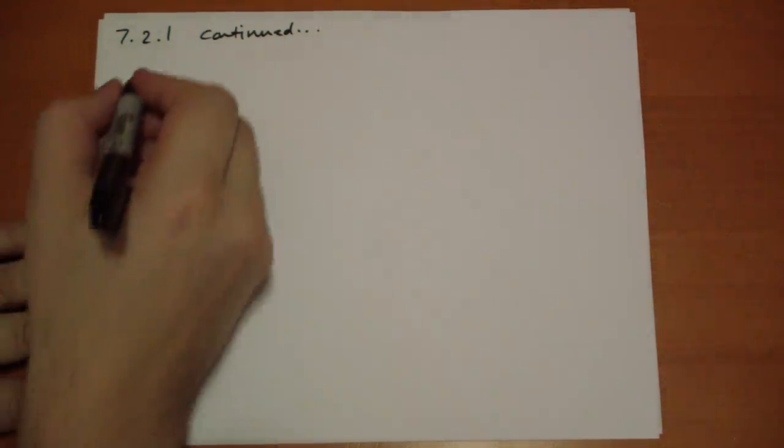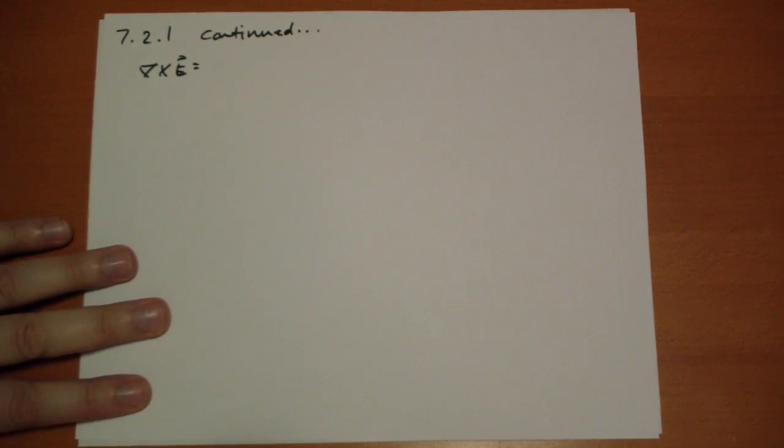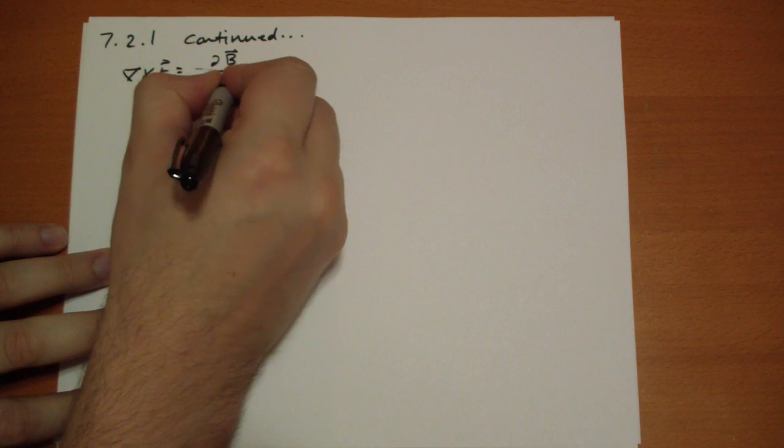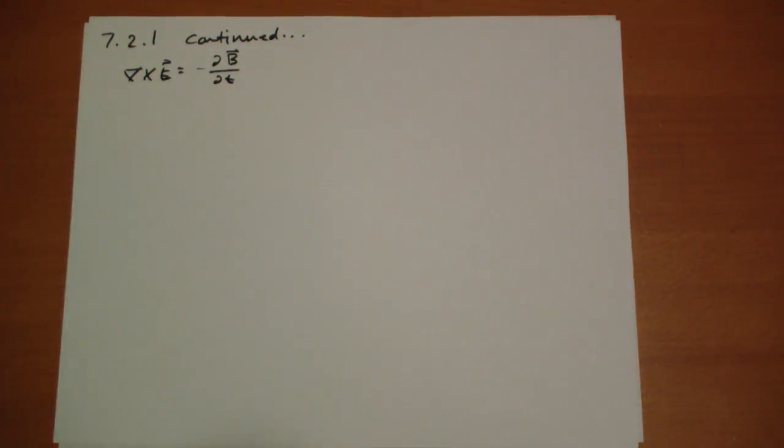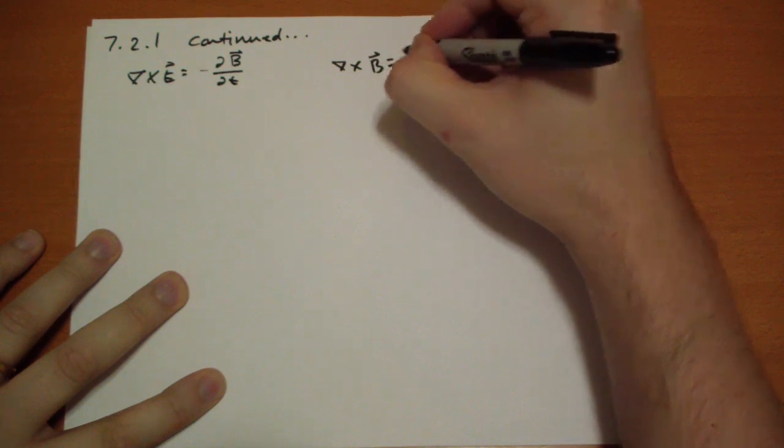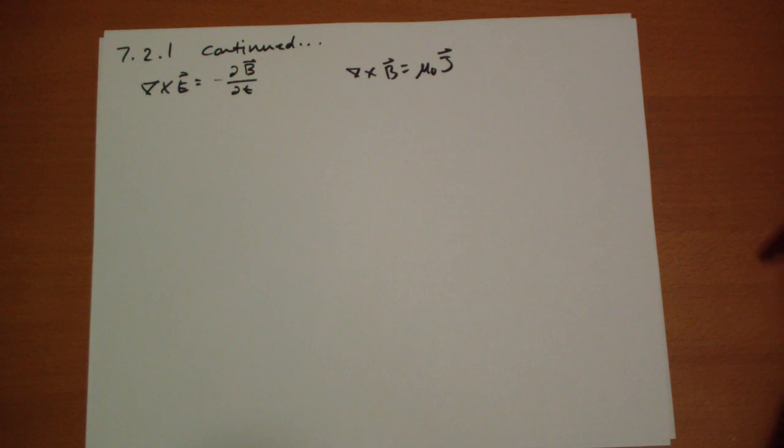So, we calculated that the curl of E, according to Faraday's law, is the change in the magnetic field over time. And this looks an awfully lot like this rule that we found earlier, that the curl of the B vector was equal to the current flowing at any particular point in space.